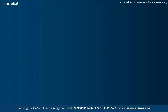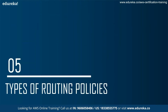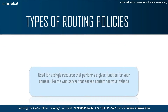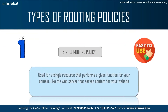Next, let's look at the types of routing policies. The first is the Simple Routing Policy, used for a single resource that performs a given function for your domain — like a web server that serves content for your website. It's called simple because you're using a single resource that performs a given function.